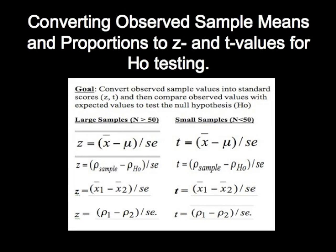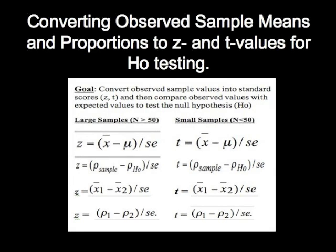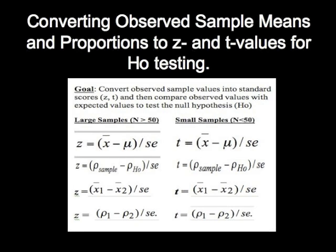Expected population mean or expected population proportion, and by dividing by the standard error. Basically you've converted those raw scores or observed scores and hypothesized scores into z-scores and t-scores.